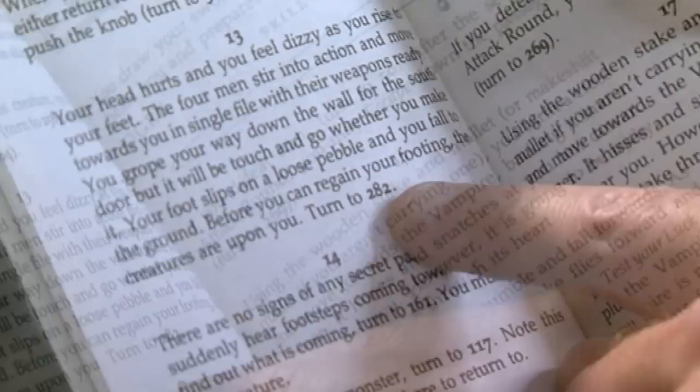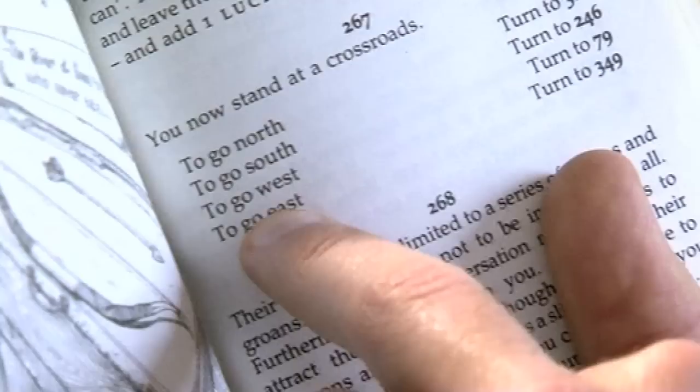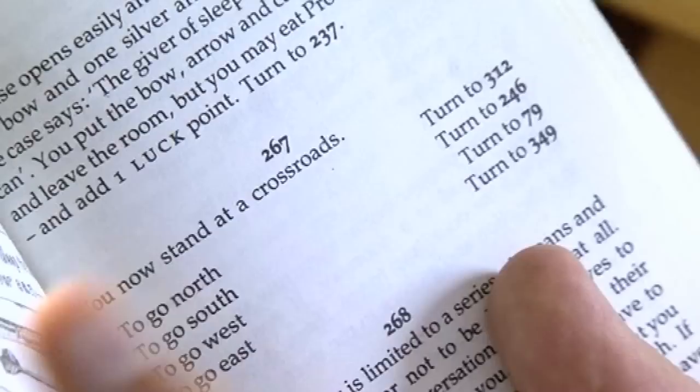Let's look at this section for a moment. Section 267, we're on our adventure, and we find ourselves at a crossroads. It's incredible how often in these books you find yourself at a crossroads. And not surprisingly, we can go north, south, east or west, and then we have to choose which number we're going to. So it's not linear. It's not like I'm going from the front of the book to the back of the book. I'm all over the place.